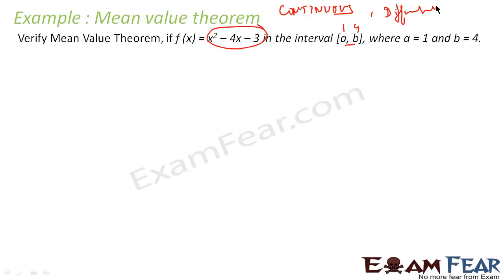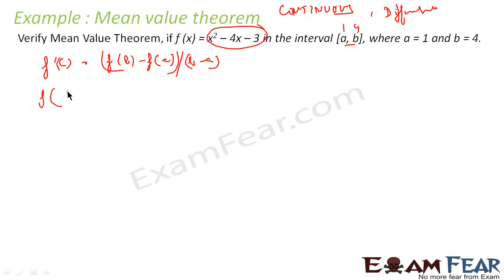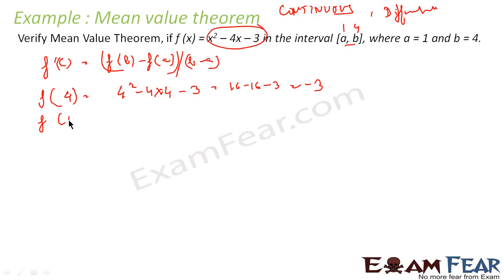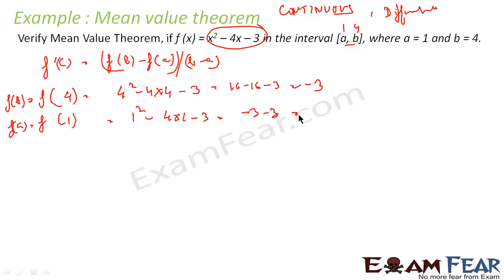Mean value theorem says there exists a c such that f'(c) = (f(b) - f(a)) / (b - a). So let us find f(b) and f(a). f(b) = f(4) = 4² - 4×4 - 3 = 16 - 16 - 3 = -3. Similarly, f(a) = f(1) = 1² - 4×1 - 3 = 1 - 4 - 3 = -6.